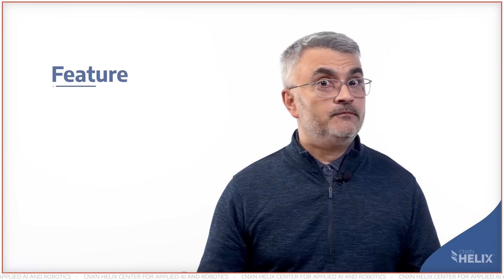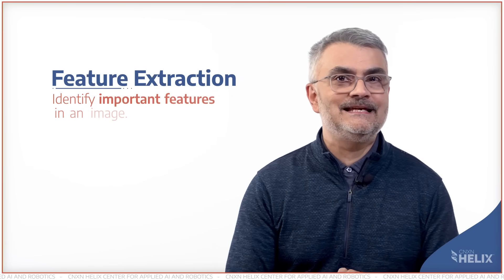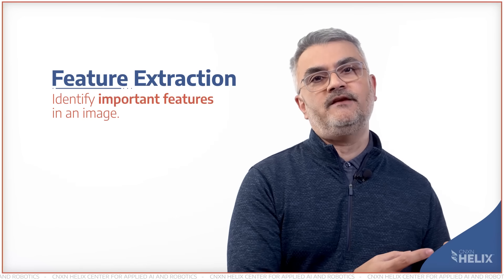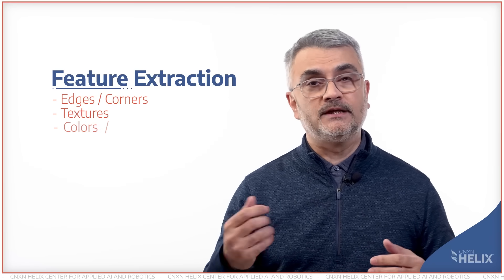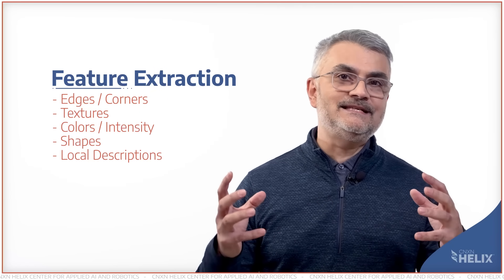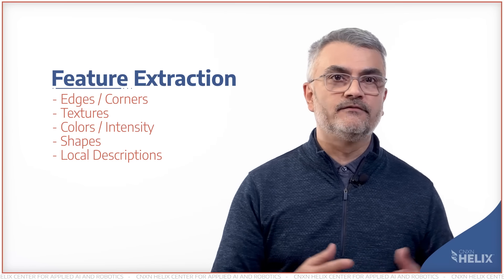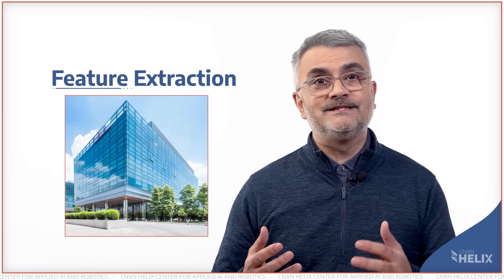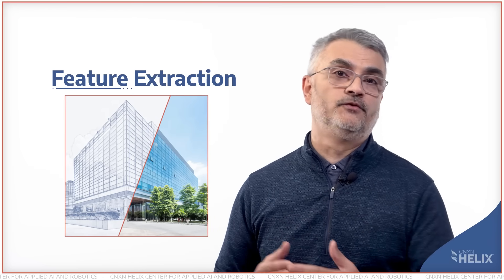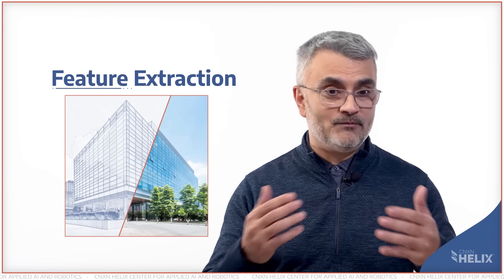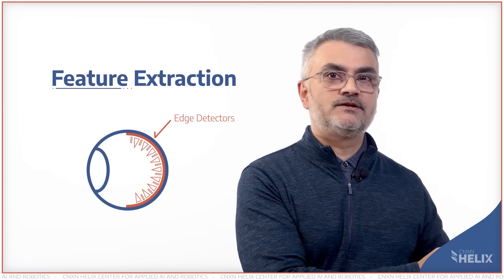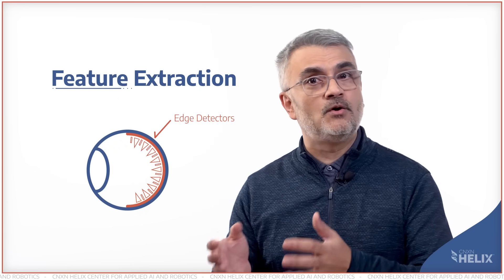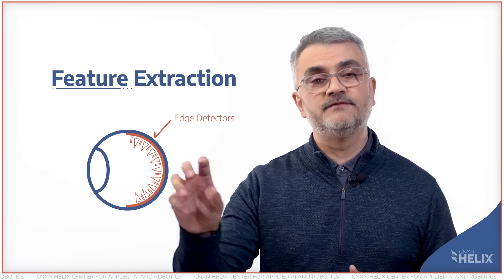The third area is feature extraction — the step where we identify and extract important features from the image. These features could be edges, textures, colors, or shapes, all of which help in recognizing objects within a frame. An example would be detecting the edges of a building in a photograph. Interestingly, specialized cells in our retina called edge detectors respond to edges and contours in the visual field, helping define shapes and objects.